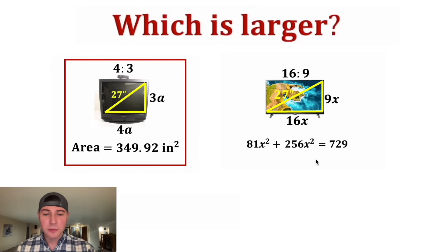81x squared plus 256x squared is equal to 337x squared. We can divide both sides by 337, and we get x squared is equal to 729 over 337.